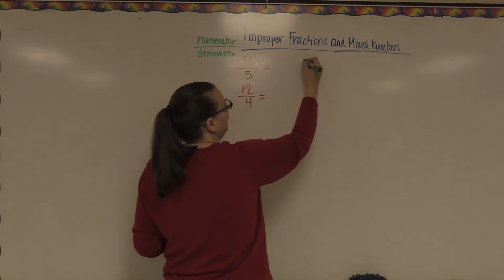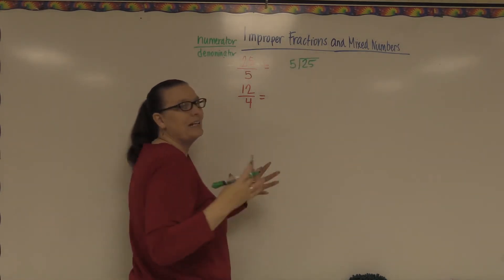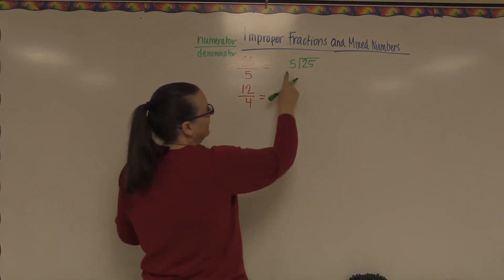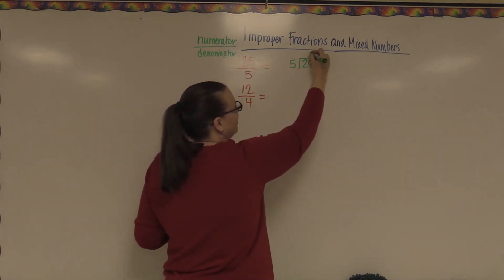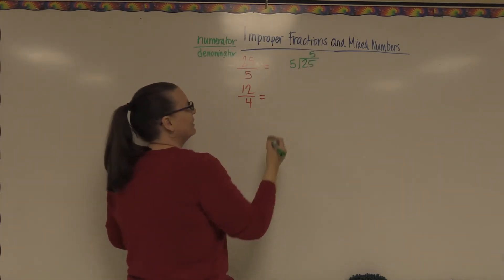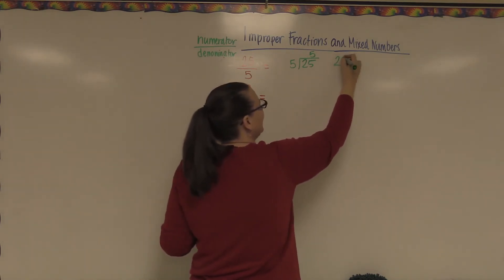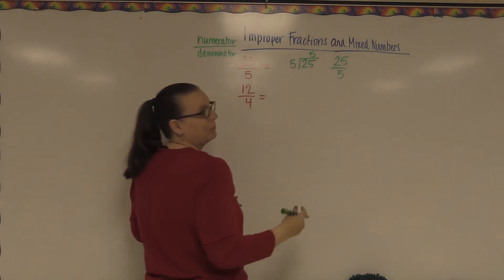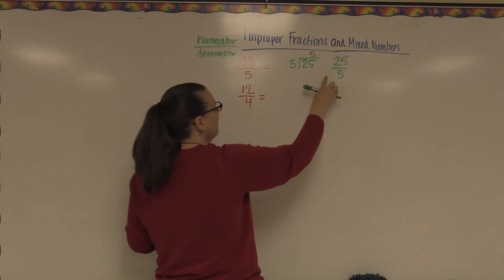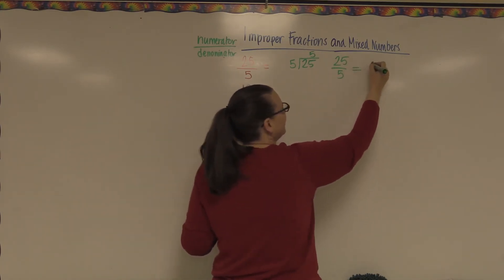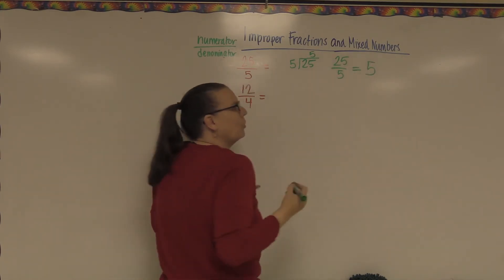So if I take 25 and I divide it by five, how many wholes can I make? How many fives fit into 25? Well, that's five. So the fraction 25 fifths, which is an improper fraction because the top is way bigger than the bottom, is actually the same thing as five whole pieces.